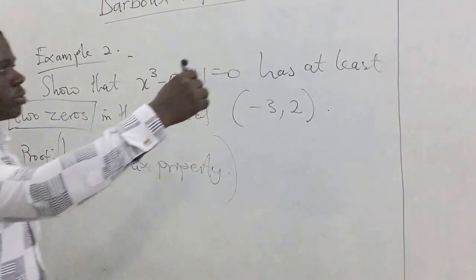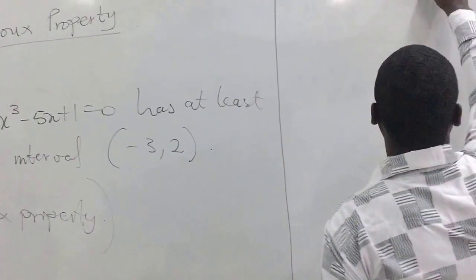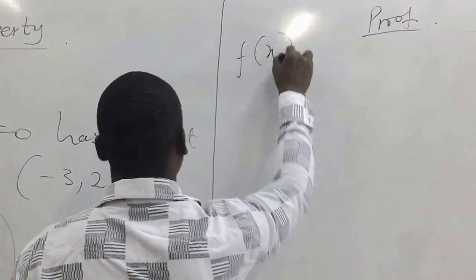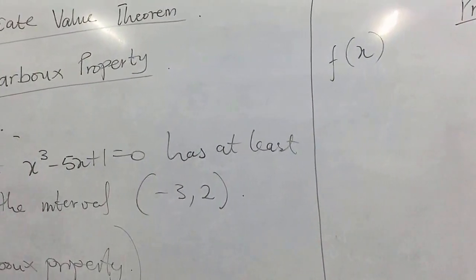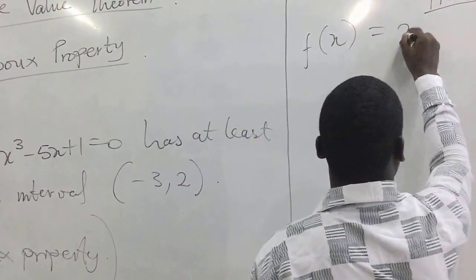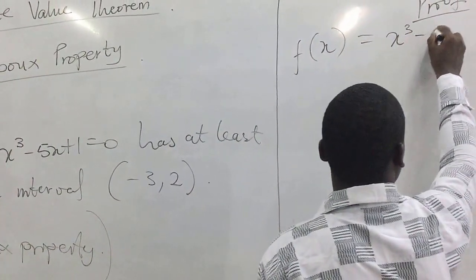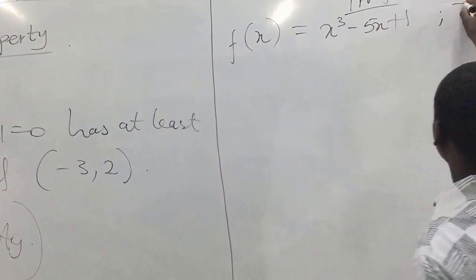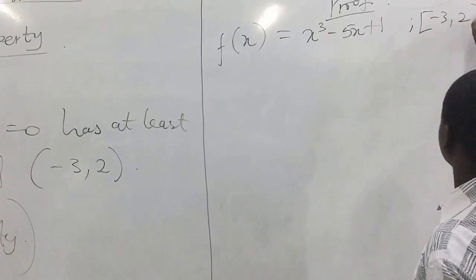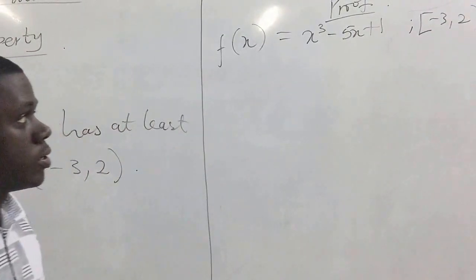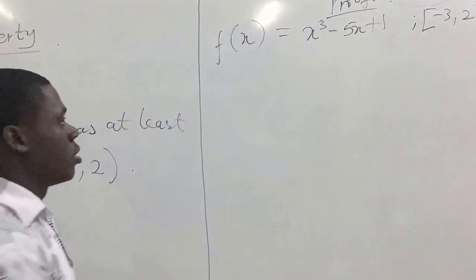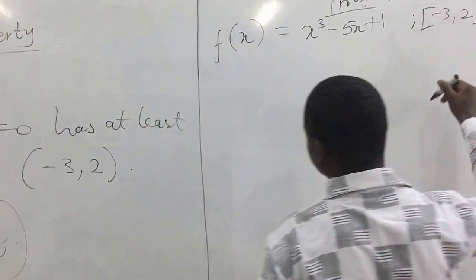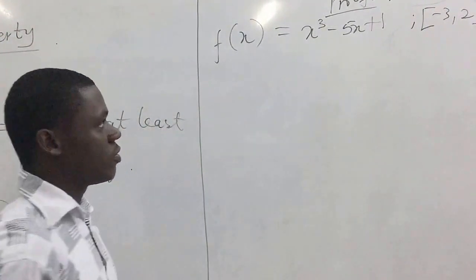Let's get to business and see what we can do. So let's do the proof here. We have the equation written as a function: f(x) = x³ - 5x + 1. We want to look at the closed interval [-3, 2]. All that we need to do is find out whether it is actually continuous on the closed interval.